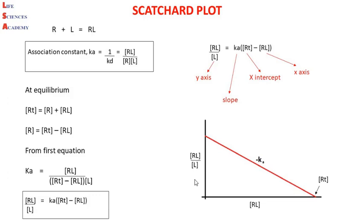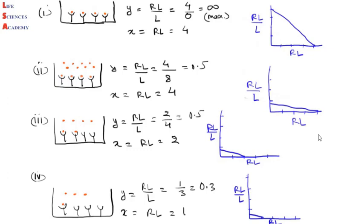Now we have derived the Scatchard equation and also the Scatchard plot. But the question is: how can we interpret this plot? To understand this, let us study different cases of varying ligand concentration with a fixed amount of receptor concentration.